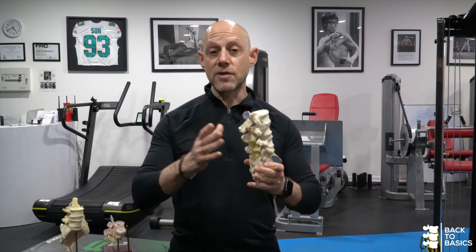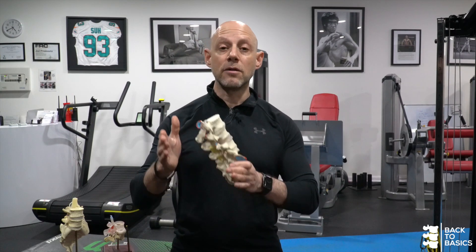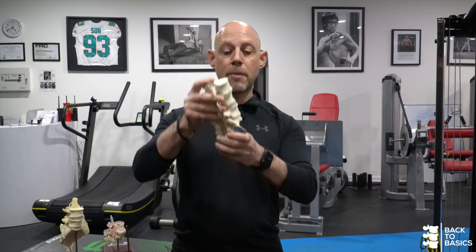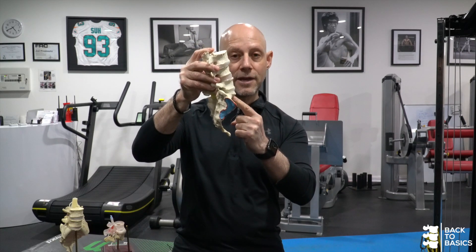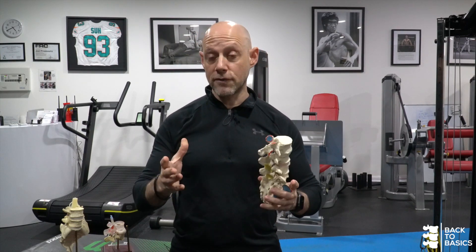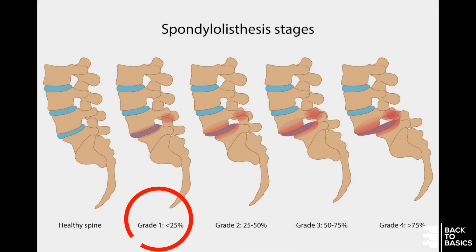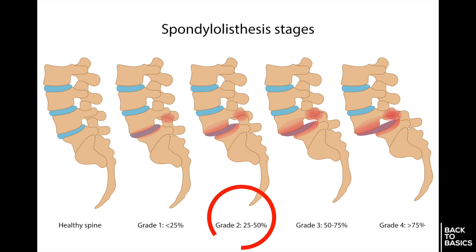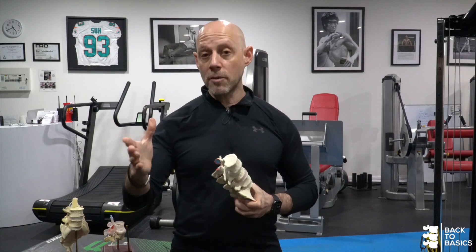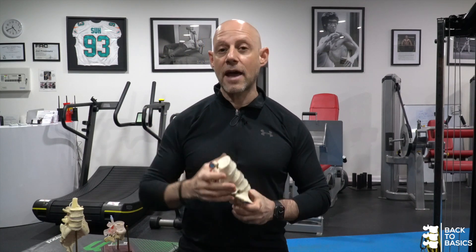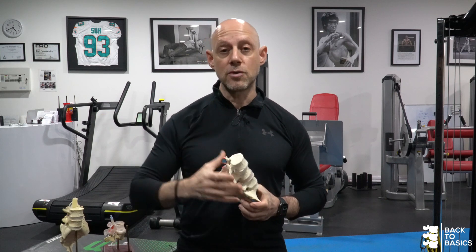The slippage of a spondylolisthesis is graded on a scale from one to four, and we base it on how far the vertebra slips forward on top of the one underneath it, taking into account the total surface area. A grade one indicates that the slippage is between 0 and 25 percent, a grade two from 25 to 50, a grade three from 50 to 75, and a grade four from 75 to 100 percent slippage. The most common presentation, especially in the adult population, is a grade one or a grade two slippage.